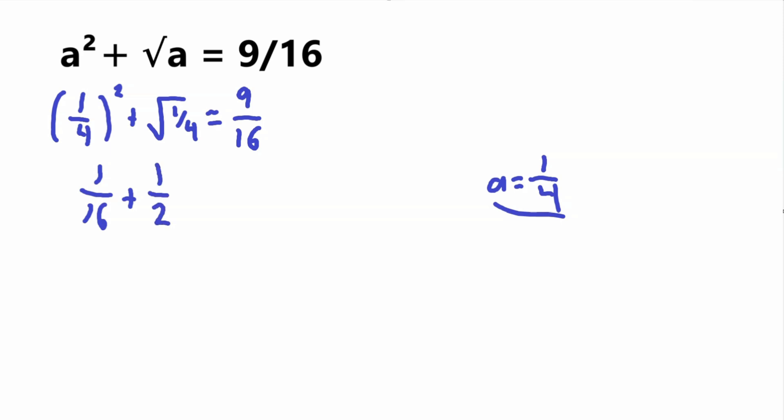1 half equals 9 sixteenths. 1 half can be rewritten as 8 sixteenths, because 8 over 16 equals 1 half. 1 sixteenth plus 8 sixteenths equals 9 sixteenths. This is correct, we checked our work. The final answer is a equals 1 fourth.